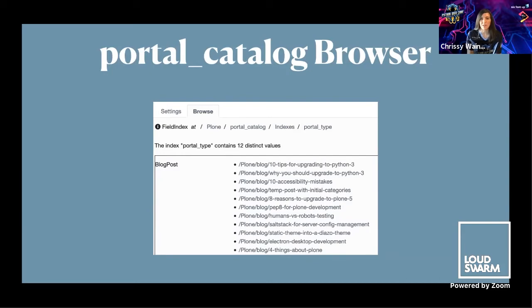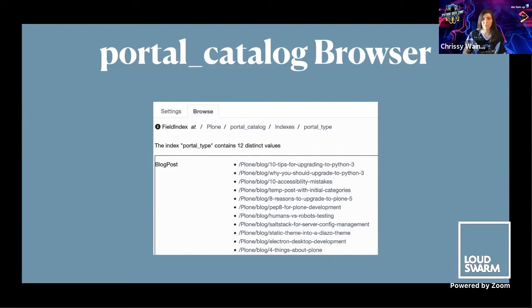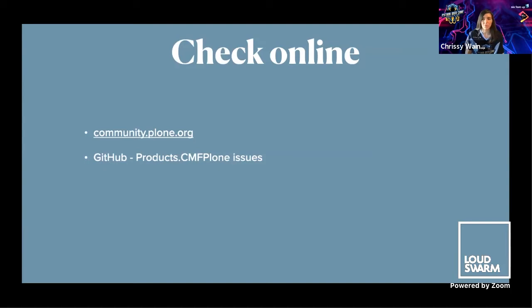The portal catalog has also helped me a lot. Let's say I have a bug with a particular content type and I don't know where all of those objects live in the site. I can go to the portal catalog, look at the indexes, sort by portal type, and click the Browse tab — that lists out where all of those objects are split up by content type. This has also been helpful when upgrading a Plone site to Python 3: if the site uses PloneFormGen forms, I want to know where all of those forms live before starting a migration. For checking online, posting in a forum for Plone is done at community.plone.org. If you know which add-on is causing problems, go look at that specific issue tracker; otherwise the general one for Plone is in products.cmfplone.